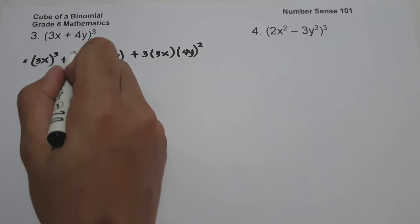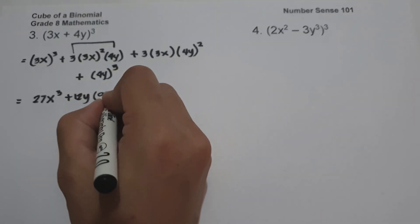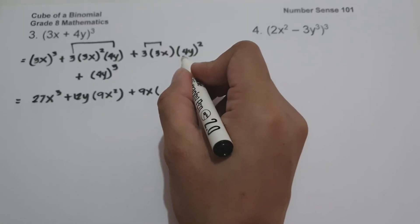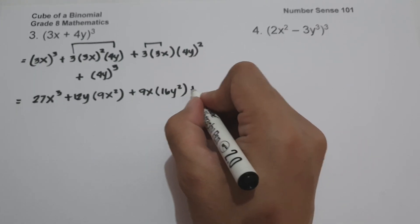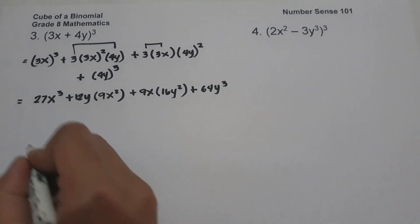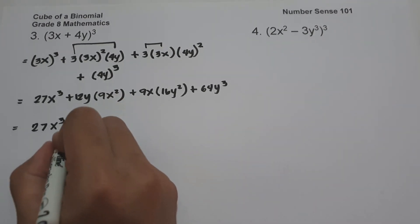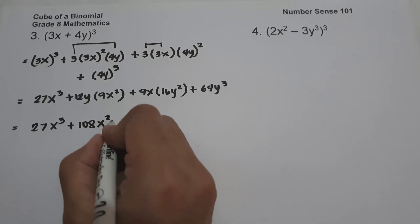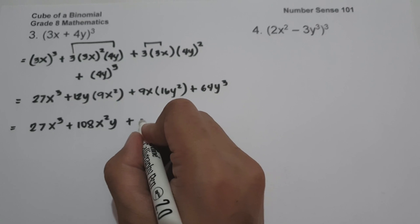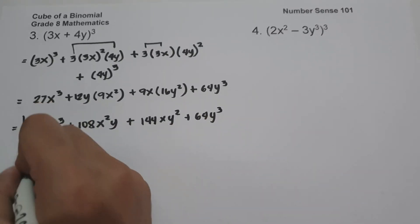Simplifying: 3x raised to 3 is 27x cubed. Then 3 multiplied by 4y is 12y, and the square of 3x is 9x², giving 108x²y. Then 9x multiplied by the square of 4y — which is 16y² — gives 144xy². The cube of 4y is 64y³. So the final answer is 27x³ + 108x²y + 144xy² + 64y³.